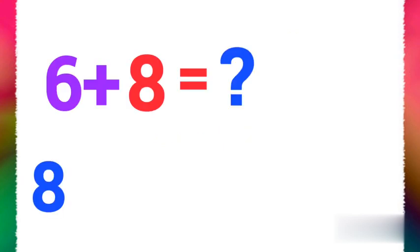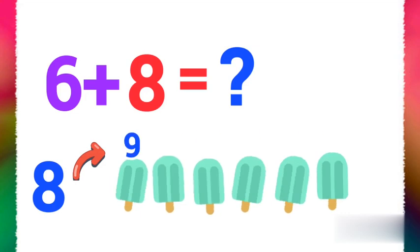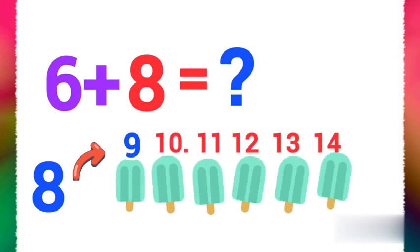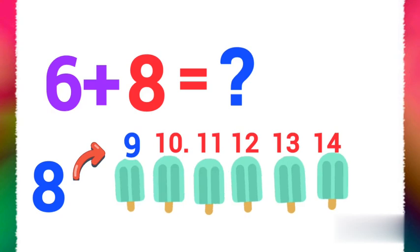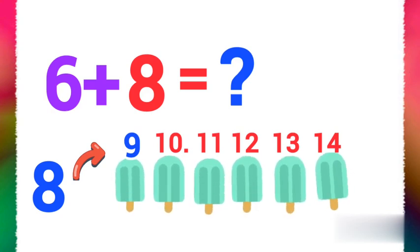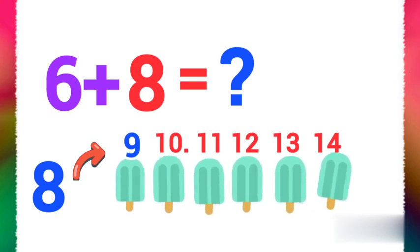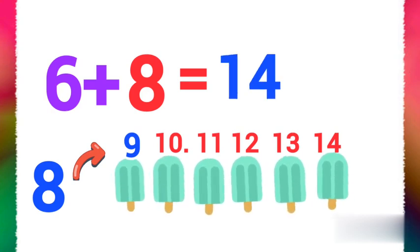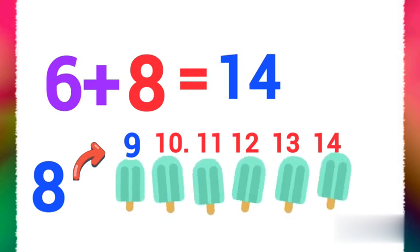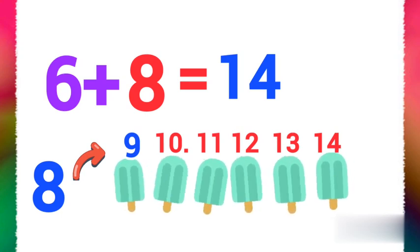Another example: 6 plus 8. Start with bigger number 8, and 6 fingers up. 8, 9, 10, 11, 12, 13, 14. 6 plus 8 equals 14.